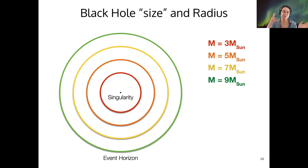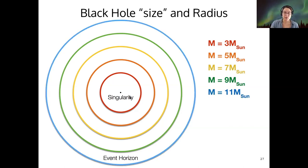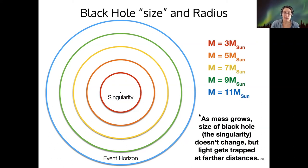So evenly spaced masses of black holes would have evenly spaced sizes of event horizon. And the singularity size is zero for all of those. What we can also see from looking at this is that if you have a more massive black hole, then the event horizon is farther away from the singularity. But if you have a less massive black hole, the event horizon is quite close to the singularity.